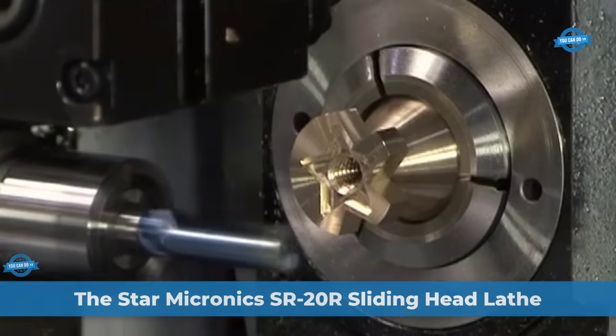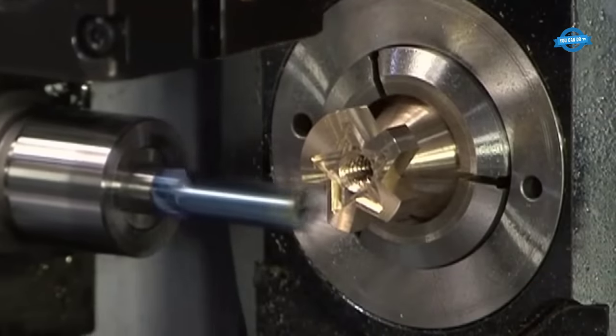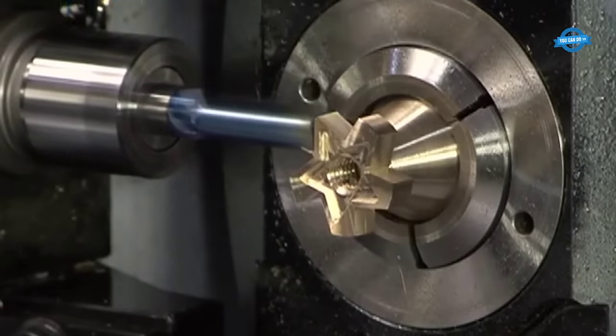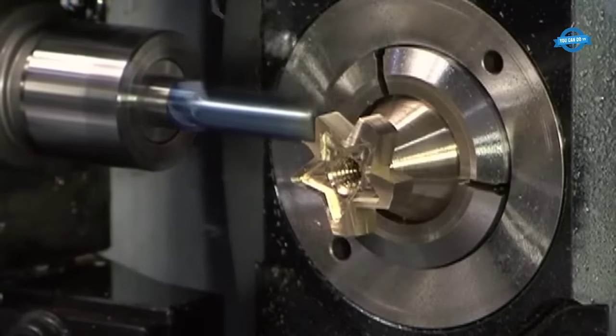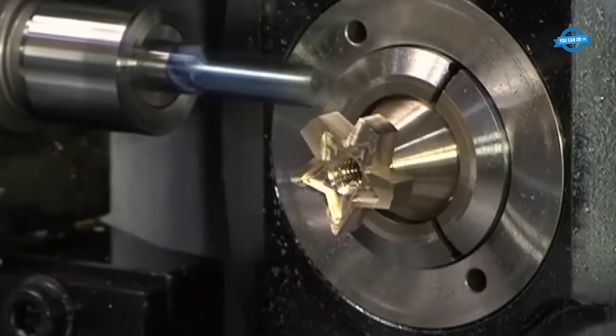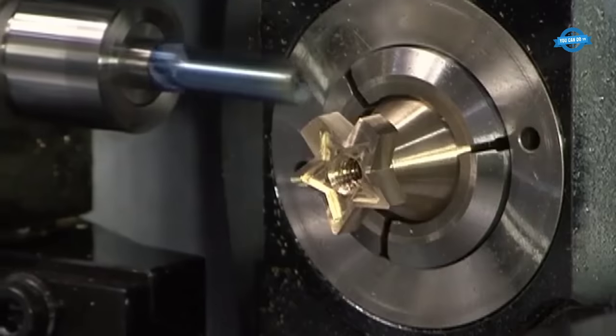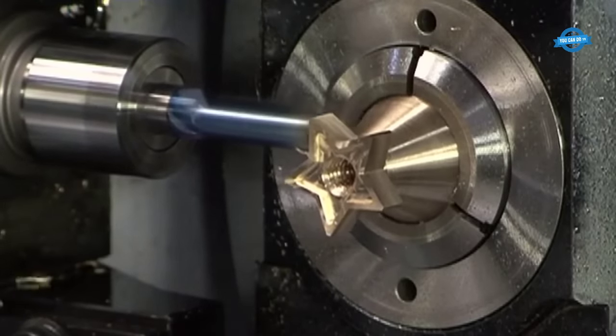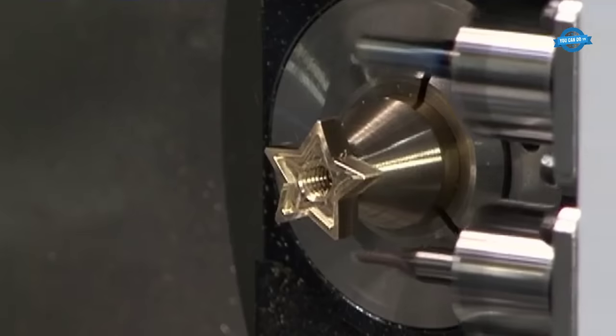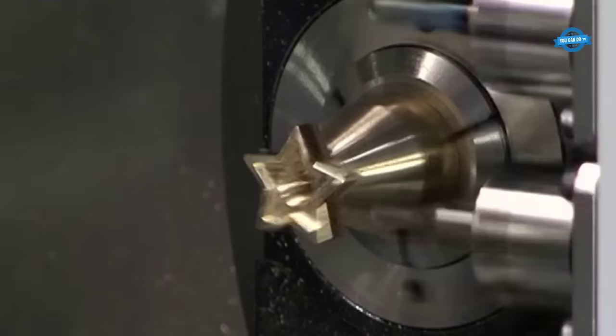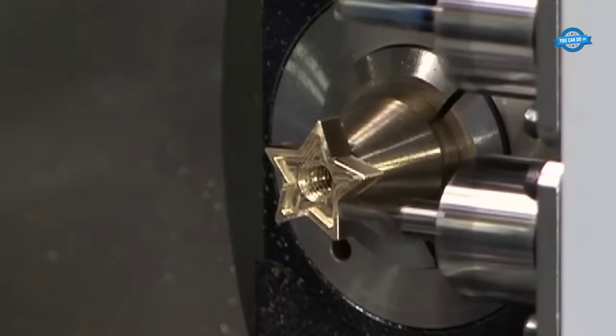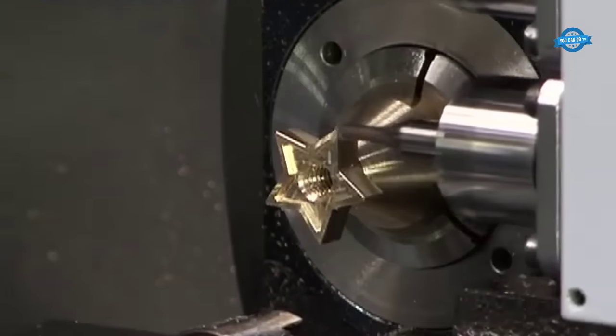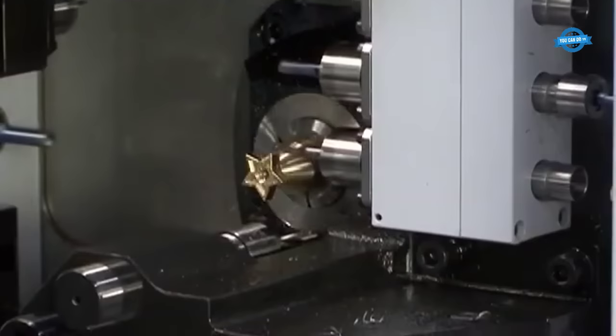The Starmicronic State Route 20R sliding head lathe is a cutting-edge machine that offers exceptional performance and versatility within the 20mm class. Designed for precision engineering and efficient machining, this lathe is equipped with advanced features to handle complex components with ease. One of the standout features of the State Route 20R is its tool mounting capability. It can accommodate up to 41 tools, allowing for a wide range of operations without the need for constant tool changes. Additionally, the B-axis tool post can hold six tools, further enhancing its multitasking capabilities. The inclusion of FANUC's High Specification 31 IB5 control system empowers the lathe with full 5-axis capability, enabling the machining of highly intricate components.